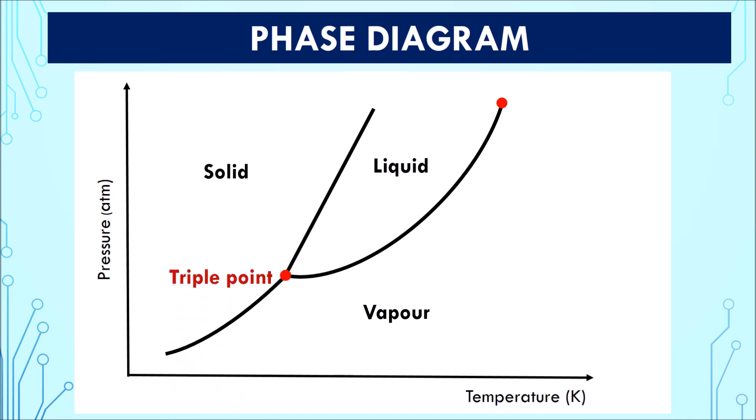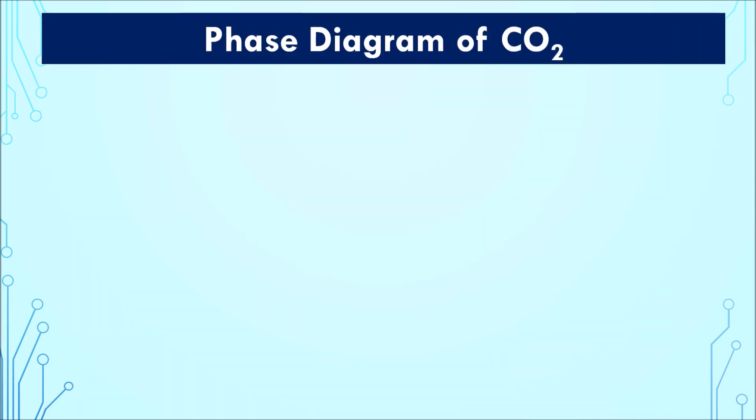Finally, points whereby the phases meet. Now, let's look into the phase diagram of carbon dioxide.